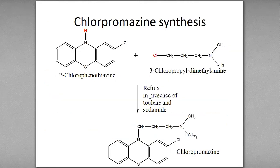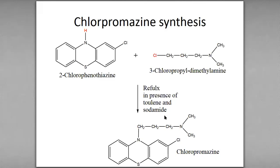Chlorpromazine synthesis: 2-chlorophenothiazine is reacted with 3-chloropropyl-dimethylamine under reflux in the presence of toluene and sodamide to yield chlorpromazine.